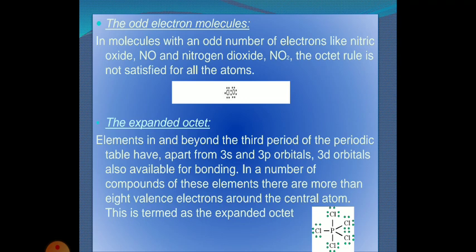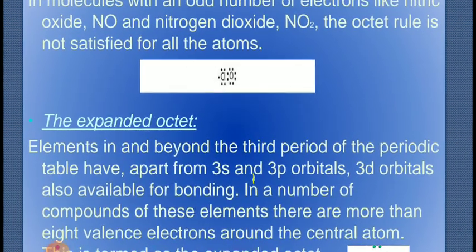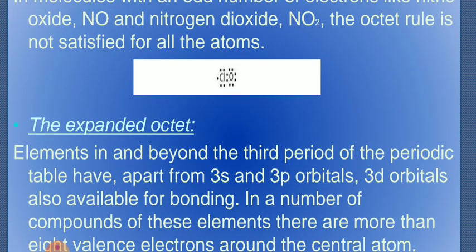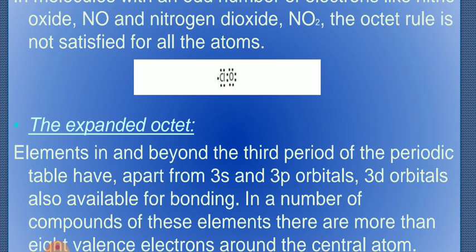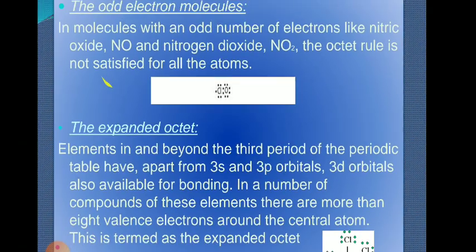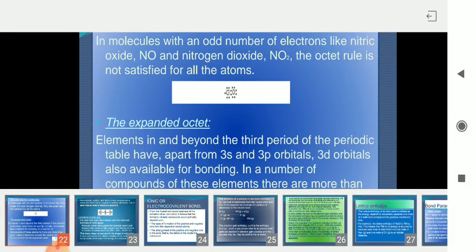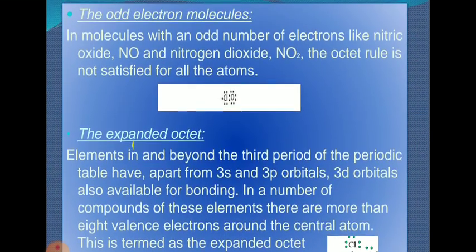The next point is odd electron molecules. In molecules with an odd number of electrons, like nitric oxide and nitrogen dioxide, the octet rule is not satisfied for all atoms. For example, in NO, chlorine has 7 total electrons and oxygen has 8, making this an exceptional case.